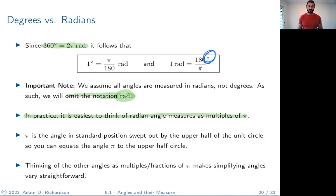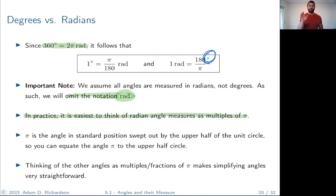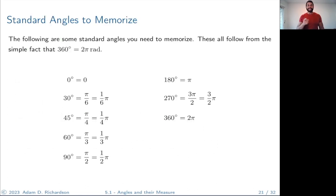Pi is the angle in standard position swept out by the upper half of the unit circle. That's what you want in your head. Then think of all other angle measures as multiples or fractional parts of that upper half circle — two times pi, half of pi, a sliver of pi. Everything in terms of that half circle.